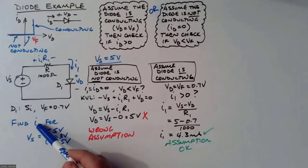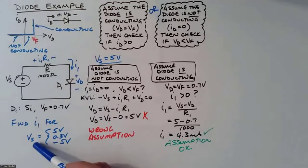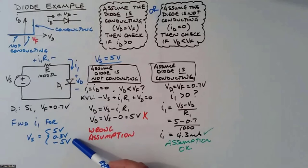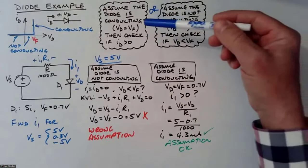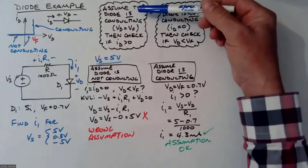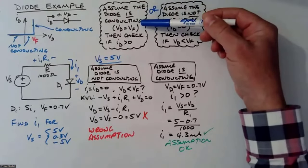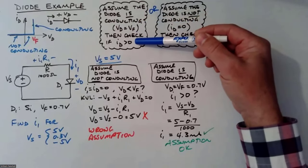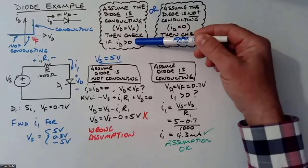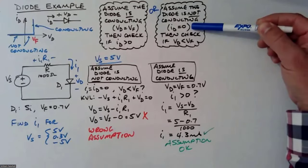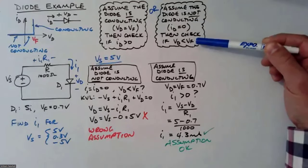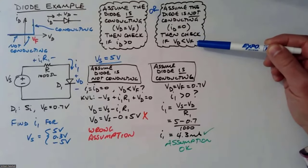The problem is to find I1, the current through the diode, for three DC source voltages: 5 volts, 0.3 volts, and minus 5 volts. We're going to work this problem making one of two assumptions: either assuming the diode is conducting, meaning Vd equals Vf, and then checking that the diode current is greater than zero; or assuming the diode is not conducting, meaning the diode current is zero, and checking that the diode voltage is less than Vf.